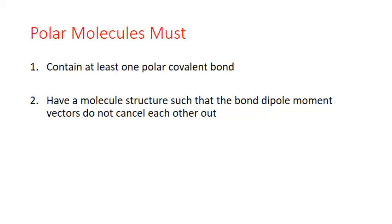So in order for a molecule to be considered polar, two conditions must be met. First, there has to be at least one polar covalent bond — if all bonds are nonpolar, you will not develop a polar molecule. Second, the molecule's structure has to be such that the bond dipole moment for that polar covalent bond is not canceled out.